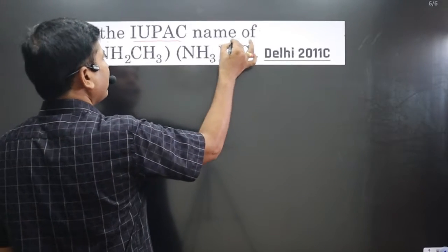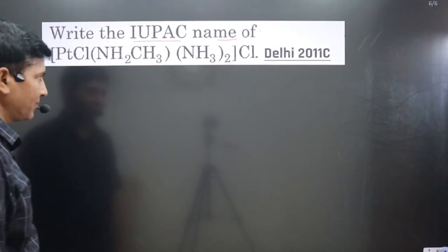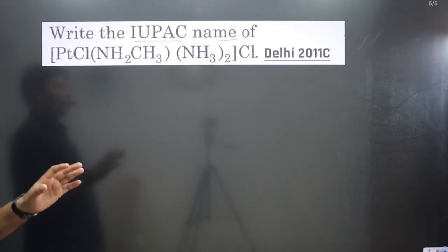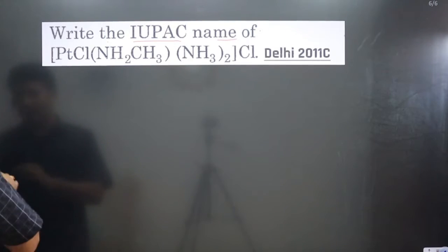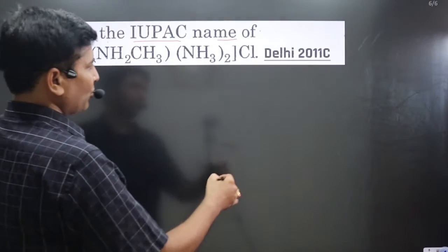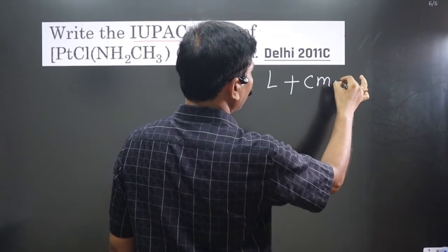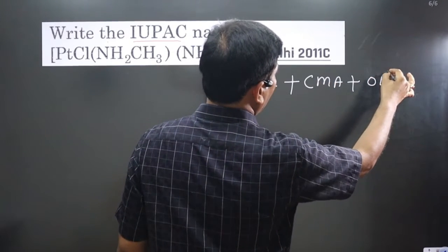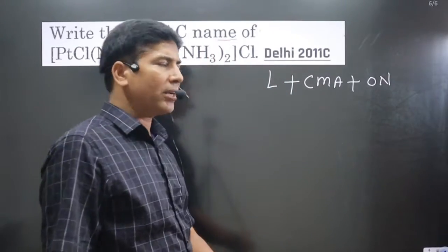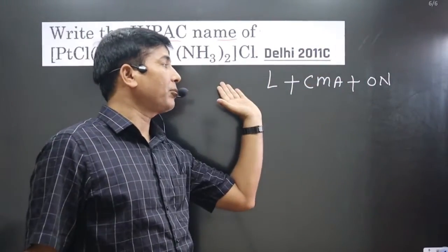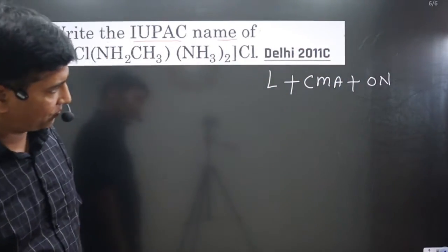The question says write the IUPAC name for the given complex. To name the complex we follow this order: first write the ligand, then the central metal atom, then oxidation number. The counter ion can be in the front or at the last.